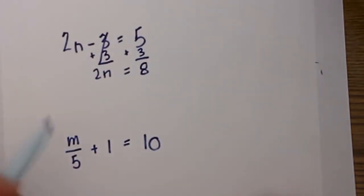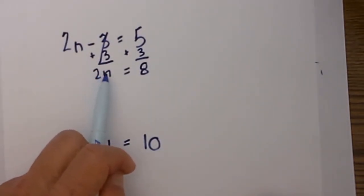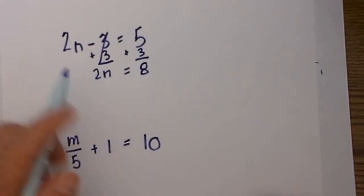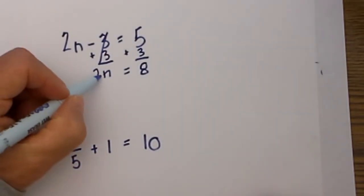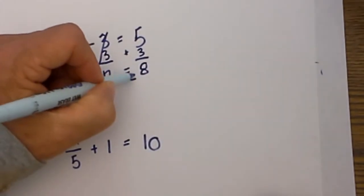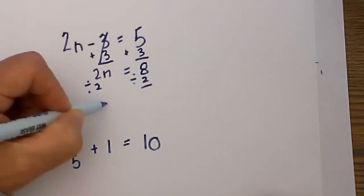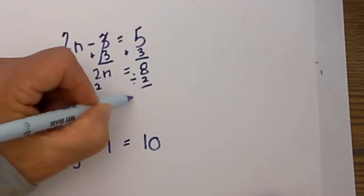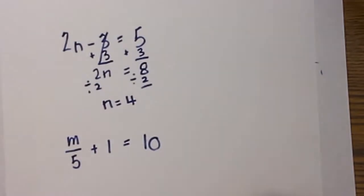Now our next goal is we need to have a one in front of the variable. So in order to do that, instead of multiplying we need to divide, so we will divide by two. We will divide each side by two and then that leaves us n is equal to four. That's the first one.